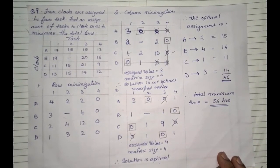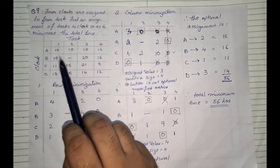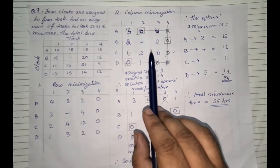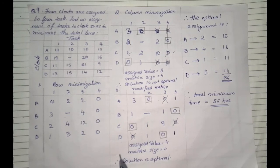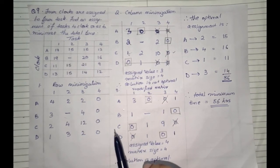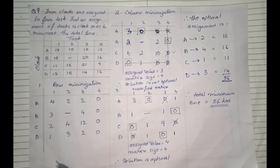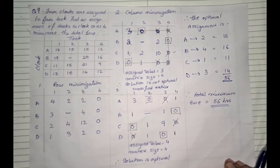This is how we need to solve the sum whenever a prohibited value is given. It is just like a normal sum — just ignore that particular value in every aspect of your table, and the entire sum can be solved in the normal manner. So this is how you solve a sum based on prohibition in a minimization assignment problem. With that, we will be ending this video here. I hope everyone understood. Thank you.